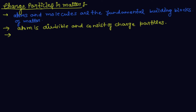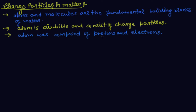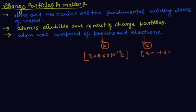We can say the atom is composed of protons and electrons. The protons are denoted by small p and electrons by small e. The charge on a proton is plus 1.6 into 10 to the power minus 19 coulomb — a positive charge. The charge on an electron is minus 1.6 into 10 to the power minus 19 coulomb. So the charge magnitude on both proton and electron is the same.